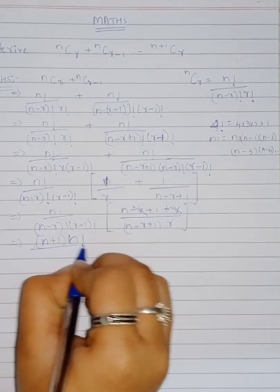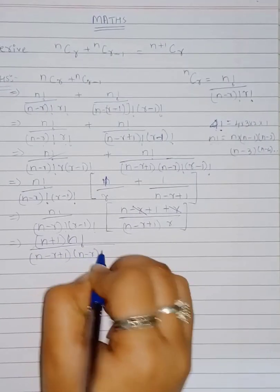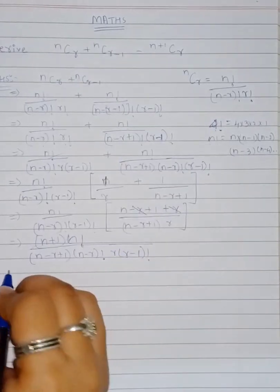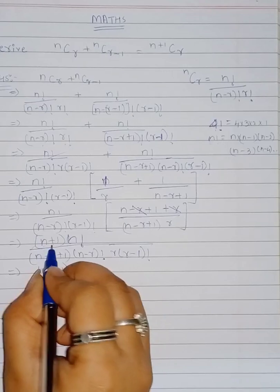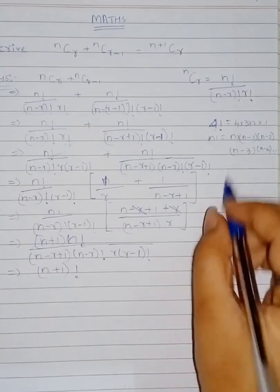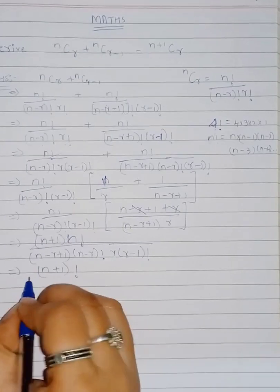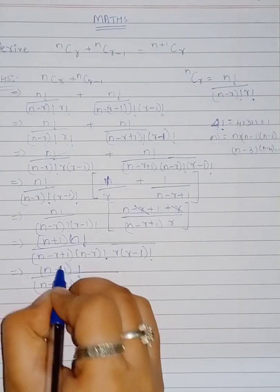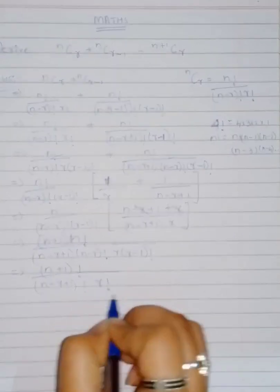So we have (n+1) · n! in the numerator. Now, (n+1) · n! = (n+1)!. Similarly, r · (r−1)! = r!. And the greater term (n−r+1) combined with (n−r)! gives (n−r+1)!. So we now have (n+1)! / [(n−r+1)! · r!].